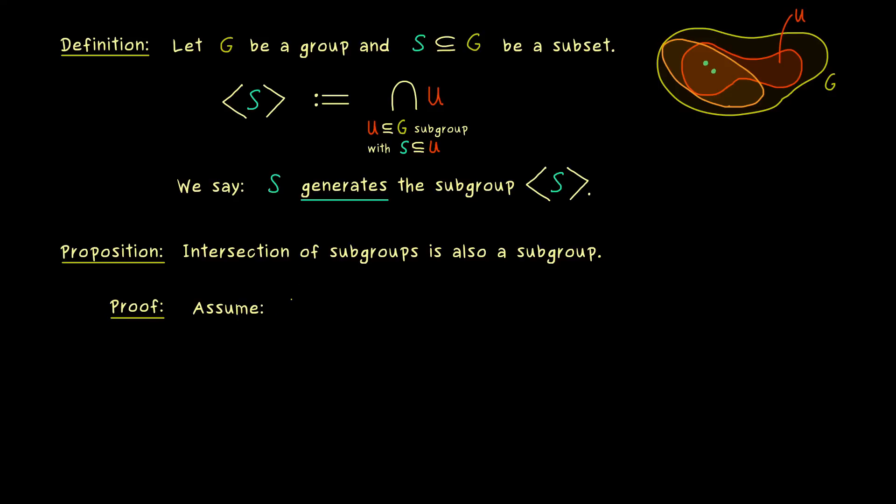And in order to write it down let's first fix the assumptions. So we have a group G and any collection of subgroups called UJ. This means here we have an index set capital J and it does not matter what this actually is. So in particular it can be an infinite index set. And now let's use the name U tilde for the intersections of the subgroups UJ.